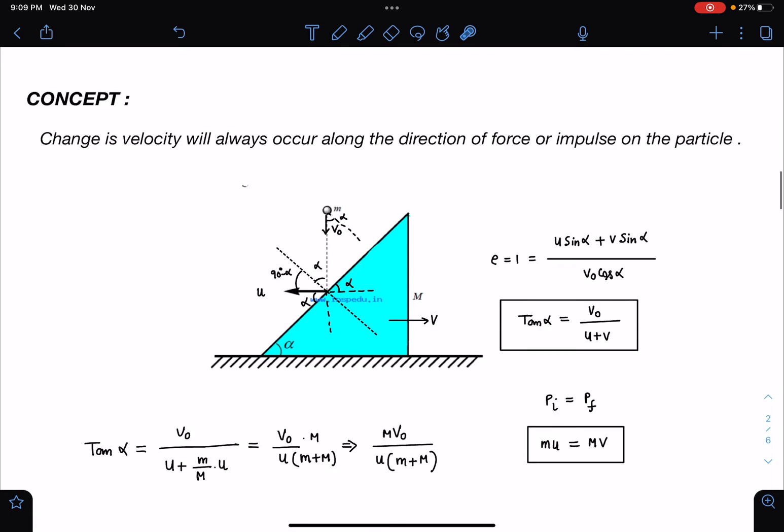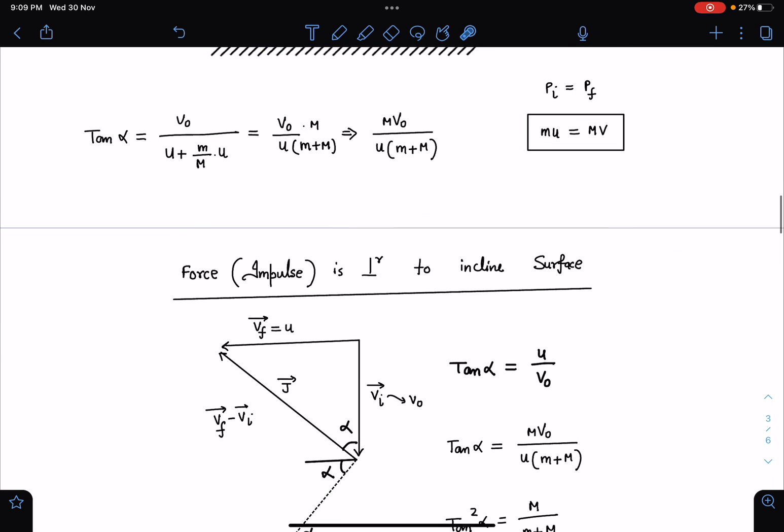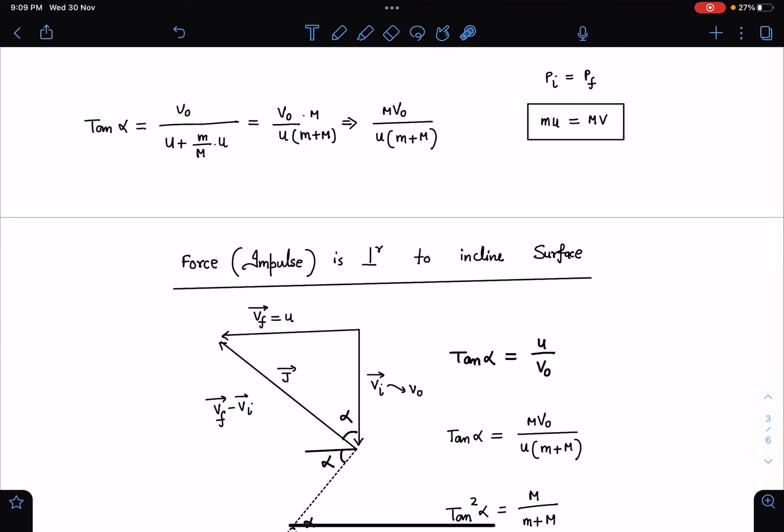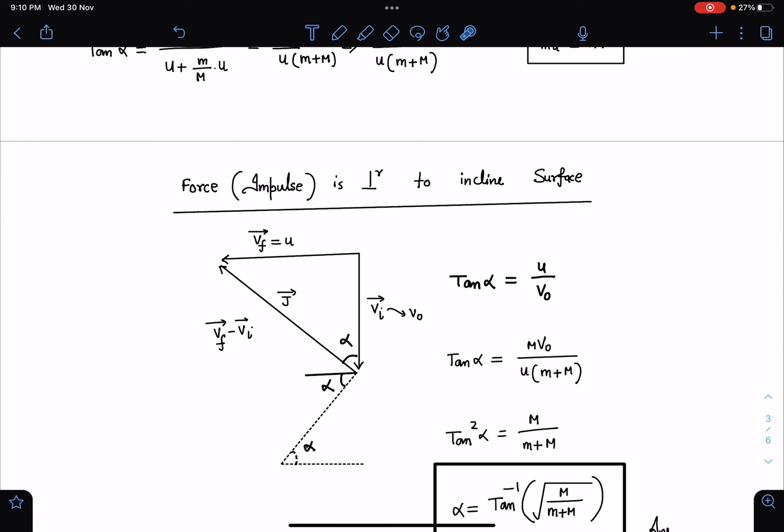In this particle we are going to apply the vector triangle. Now you can say force or impulse which is perpendicular to the inclined plane. This is your inclined plane, this is the initial velocity vector. Perpendicular to this will be the change in velocity. You can check here if this is V initial vector and this is V final vector, this is going to be the direction of impulse on the particle which is perpendicular to the inclined plane.